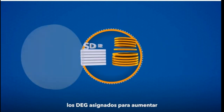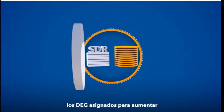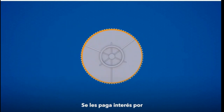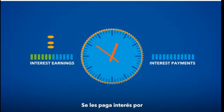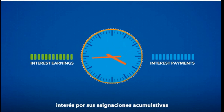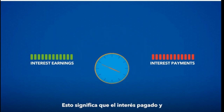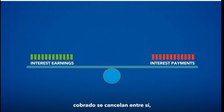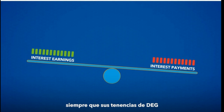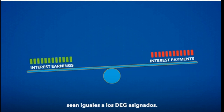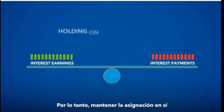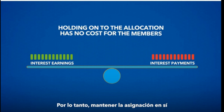Members can hold on to their allocated SDRs to increase their international reserve buffer. They earn interest on their holdings of SDRs and pay interest on their cumulative allocations at the same SDR interest rate. This means that the interest earned and charged cancel out so long as SDR holdings are equal to their allocated SDRs. So, holding on to the allocation itself has no cost for the members.